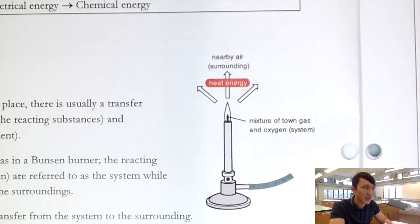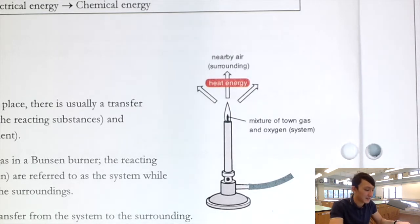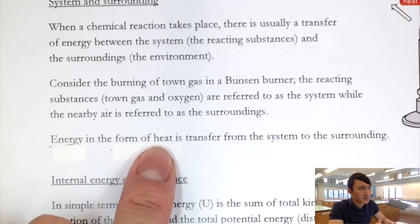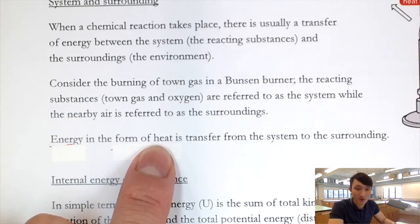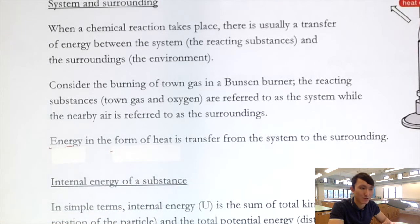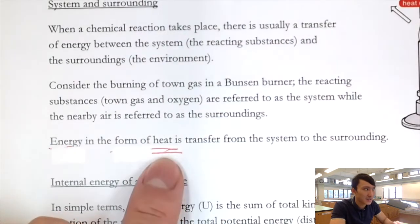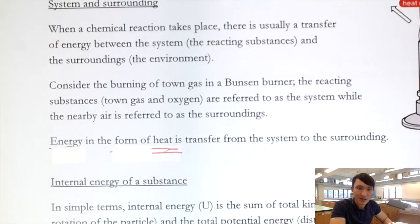If the reaction takes place in an aqueous solution, then the surrounding would be the water — the solvent. During this process, chemical energy stored in the chemicals is converted into heat energy and transferred from the system to the surrounding. In chemistry, very often when there is a chemical reaction or energy change, the energy is changed in the form of heat, which is transferred between the system and surrounding.